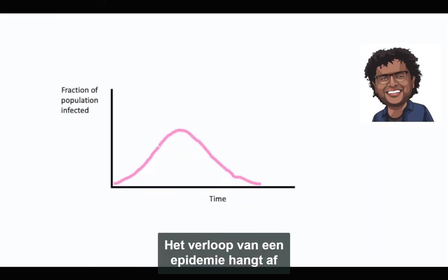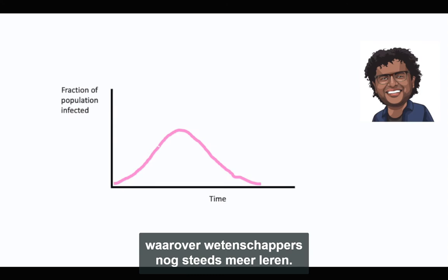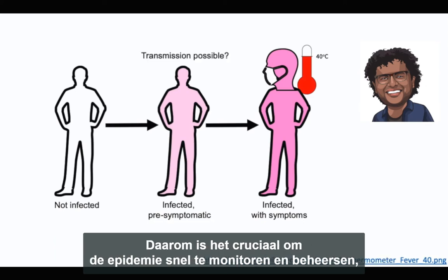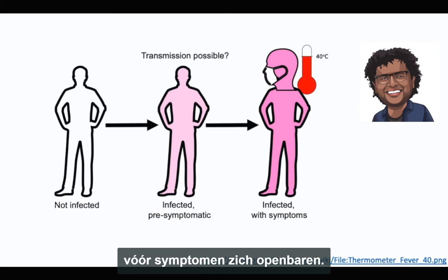The course of an epidemic depends on a number of key epidemiological factors, some of which scientists are still learning about. First, there may be considerable presymptomatic infectiousness. This makes early surveillance and control of this epidemic crucial, because transmission can potentially take place before the onset of symptoms.